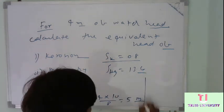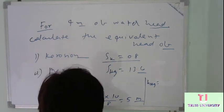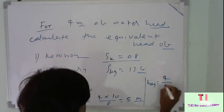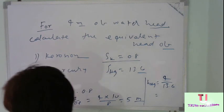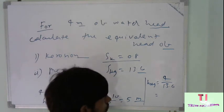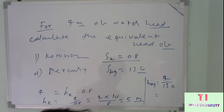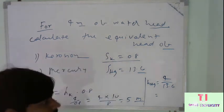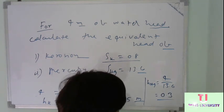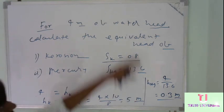Similarly, we can calculate for mercury: H mercury equals 4 divided by 13.6. Whatever you calculate, this comes out to be approximately 0.29 meters. On this basis you can calculate the water head equivalent for any liquid using these formulas.